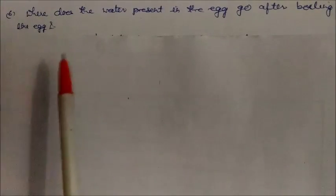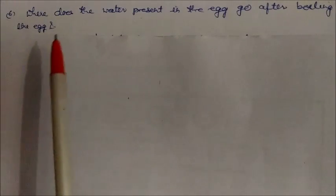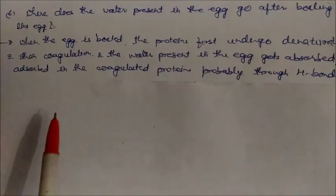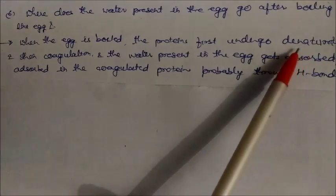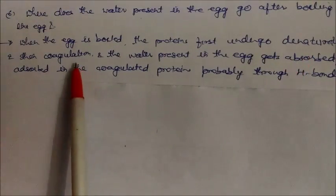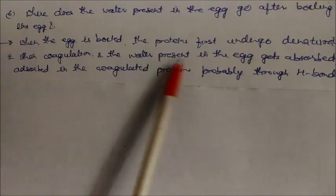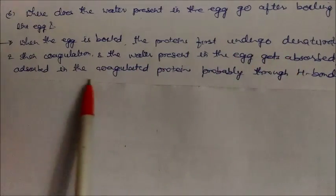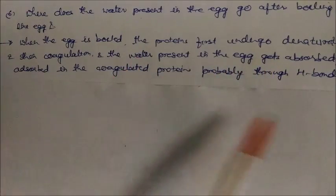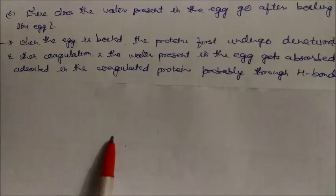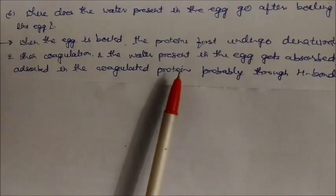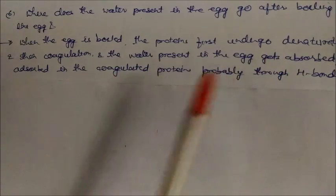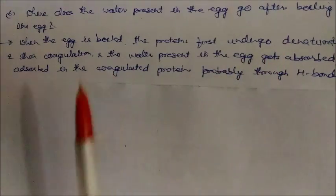Where does the water present in an egg go after boiling? When an egg is boiled, the protein first undergoes denaturation — the protein structure breaks down — and then coagulation occurs. The water present in the egg gets absorbed or adsorbed into the coagulated protein, probably through hydrogen bonding, though this is still not fully confirmed.